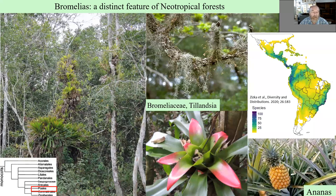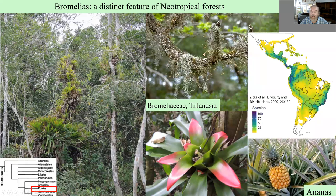Another physiognomically surprising sister group of grasses are bromelias. These are exclusively neotropical, mostly epiphytes — pineapple is one of the exceptional bromelias that is not epiphytic. These are species diversities of bromelias, with the Atlantic forest as the maximum. They can be very heavily represented there. Bromelias are famous for having leaves arranged to collect water into bromelia tanks — basically water tanks which support entire food webs of insects. These are little container habitats in the canopy containing self-contained food webs.